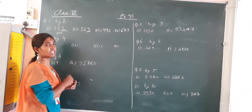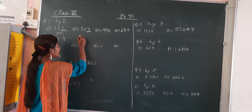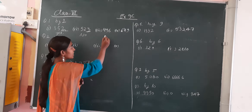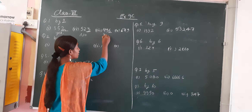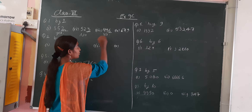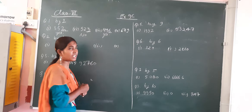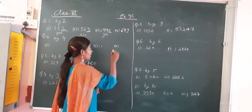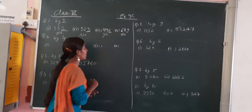In the second option, the unit place number is odd. So it is not divisible. Now, in this one the unit place number is even — yes, it is divisible by 2. In this one the unit place number is 9. 9 is an odd number, so it is not divisible.